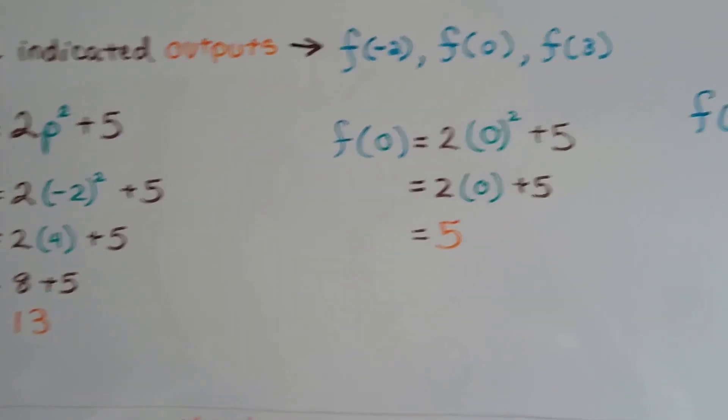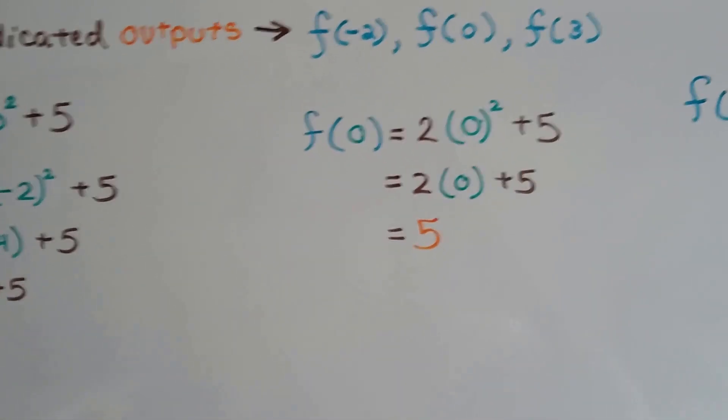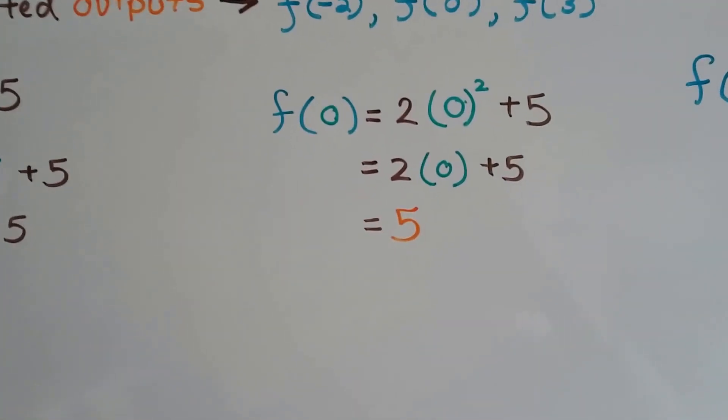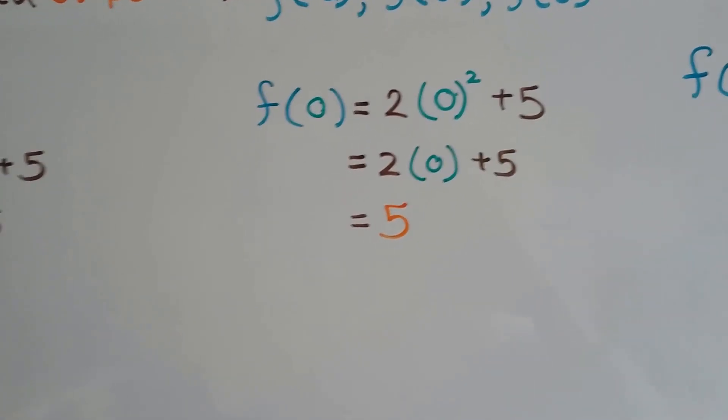If we use a 0, 0 squared is 0, 2 times 0 is 0. 0 plus 5 is a 5, our function value is a 5.